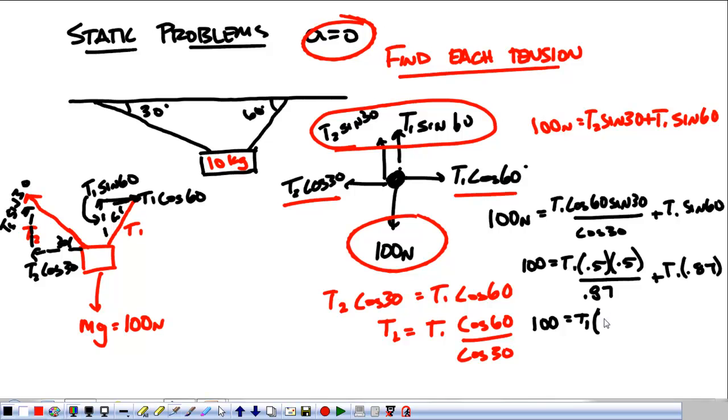So, we can add T1 times 0.29, plus T1 times 0.87. And we can add those together. And I have 100 equals 100 equals T1 times 1.16. So, T1 is equal to